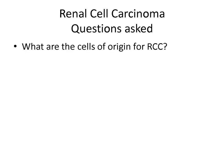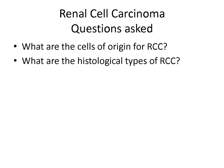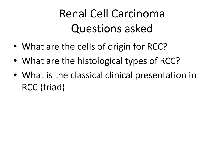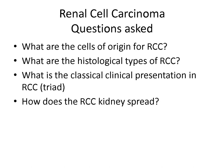The discussion can be about the different cells of origin of renal cell carcinoma. Renal cell carcinoma is usually an adenocarcinoma derived from the renal tubular epithelial cells. The histological types are clear cells or granular cells or a combination of both. The classical clinical presentation of renal cell carcinoma is a triad of flank pain, gross hematuria, and a palpable mass.